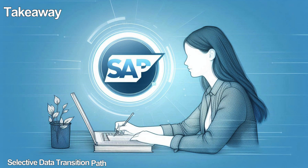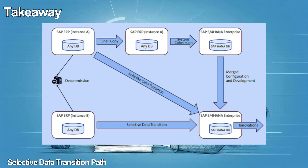The selective data transition path is about balance. It empowers businesses to retain what works, enhance what doesn't, and control the pace of change. It's nuanced, complex, and incredibly powerful when used in the right scenario. For example, a global manufacturer that wants to modernize finance but keep their logistics intact can use a shell conversion to create a sandbox, conduct fit-gap workshops, migrate only the needed data, and adopt innovations in finance while preserving existing logistics processes — achieving transformation with minimal operational risk.